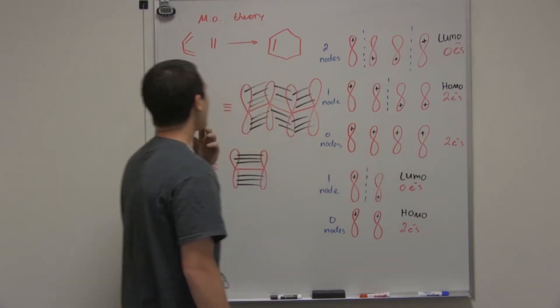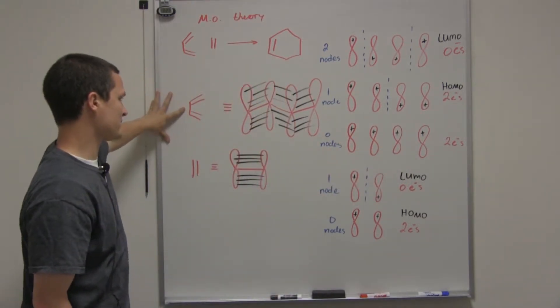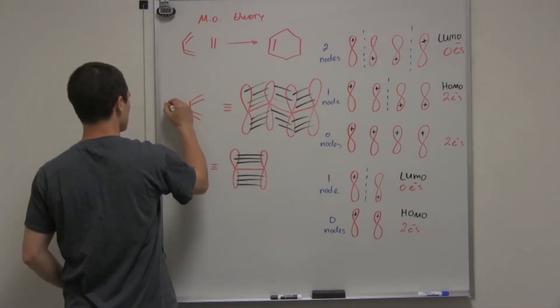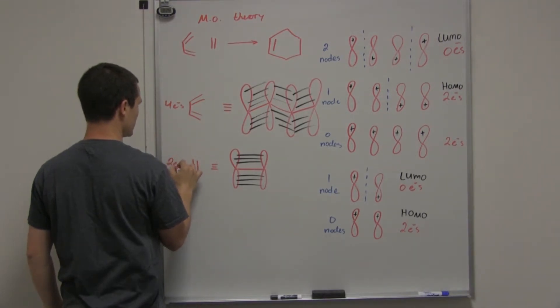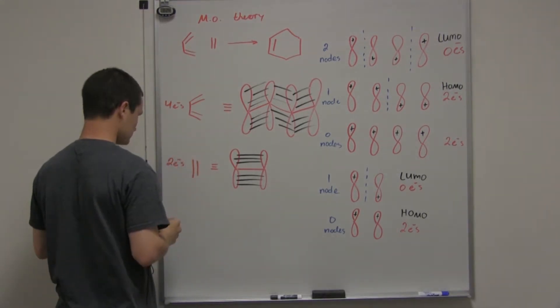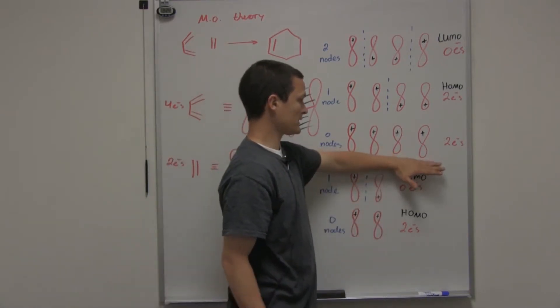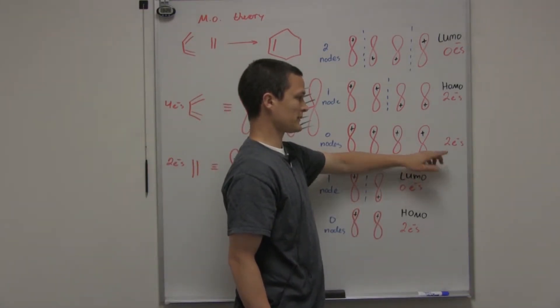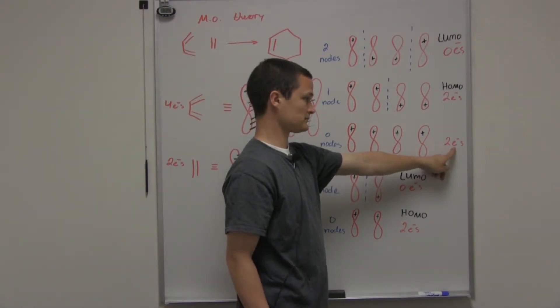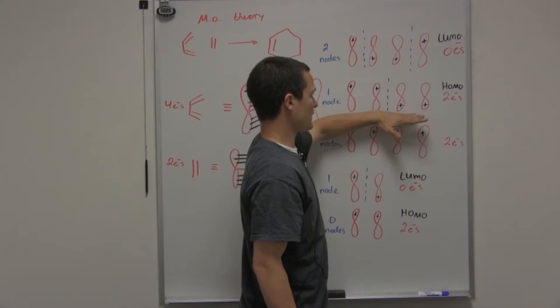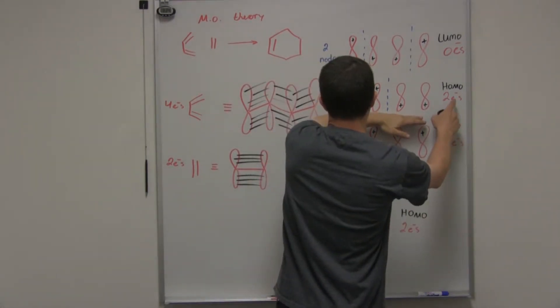And notice, how many pi electrons do we have in this system? We have a total of four, and right here we have a total of two pi electrons. In this one molecular orbital in the LUMO, we've accounted for two electrons. So what we do is we go up one energy level and we account for two more electrons.